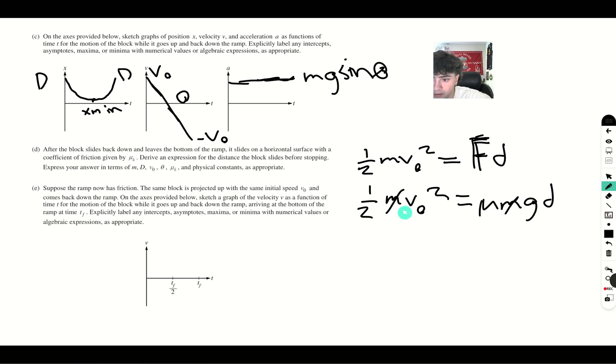These m's cancel out. And we'll get, when we divide this side by mu g, we'll get v initial squared over 2 mu g.